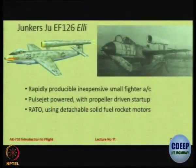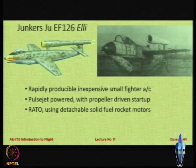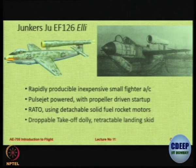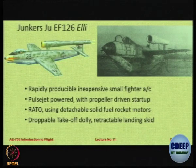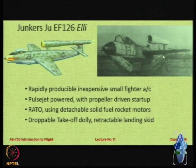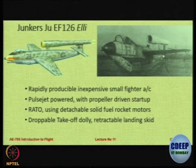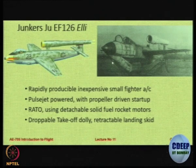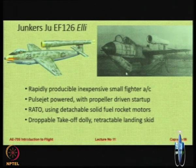It had a rocket-assisted takeoff using detachable solid fuel rocket motors on the side to provide a huge thrust during takeoff. Interestingly, the landing gear was droppable. There is a kind of a droppable dolly — you mount it below the wing, and as the aircraft moves and achieves a particular speed, the landing gear is dropped.